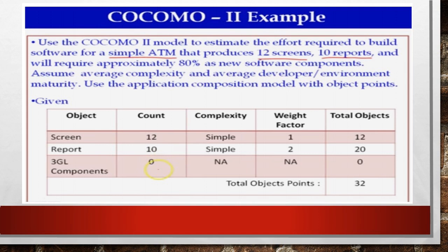The complexity of screen is simple, report simple. The weighting factor is 1 for screen and 2 for the report. We had discussed the complexity levels for simple, medium and difficulty, the weighting factor for screen, report and 3GL components. So for simple object types, the values of screen is 1 and for report the weighting factor is 2. We have to remember the complexity weight of these different levels to use in the problem.